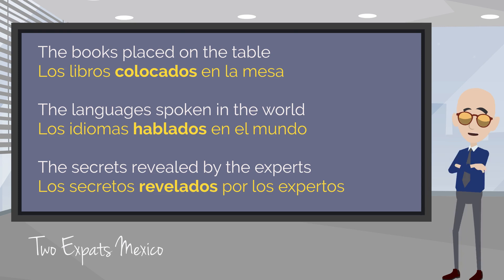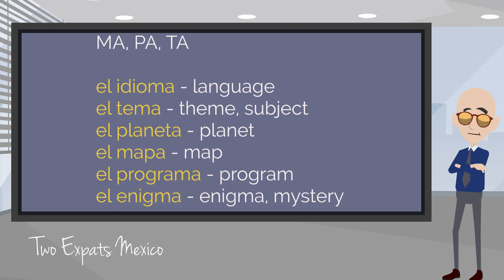So how'd you do? Did you have some trouble with that second one because the noun ended with an A but it was really masculine? Not every noun in Spanish that ends with an O is going to be masculine, and not every one that ends with an A is going to be feminine. El idioma — language — belongs to a group of words that tend to end in MA, PA, or TA. We call them ma-pa-ta words, and they're masculine. Not every Spanish noun ending in MA, PA, or TA is masculine — you just have to learn these as you go.